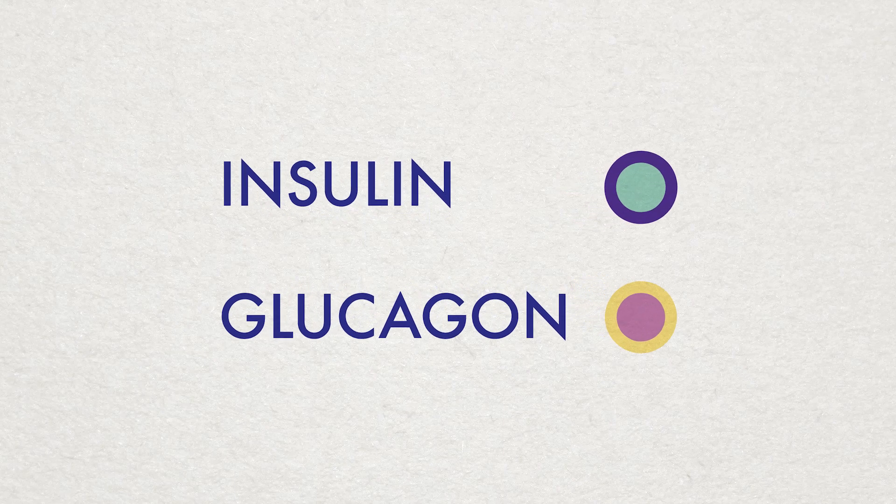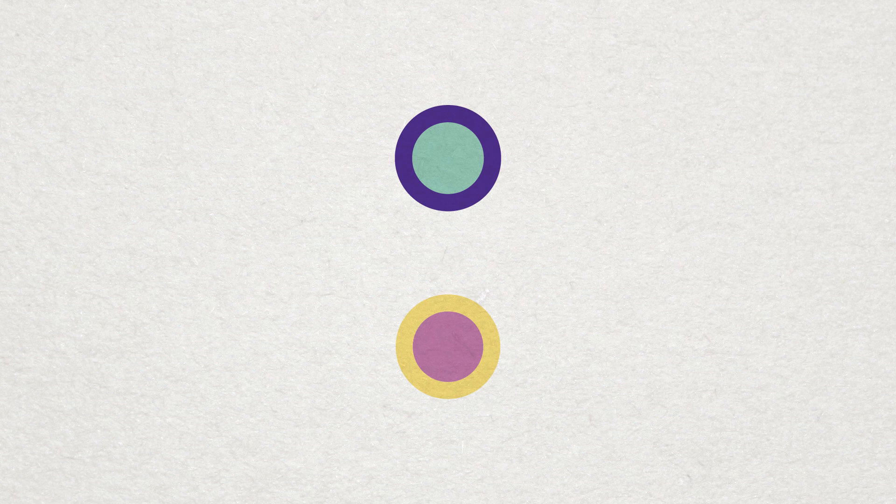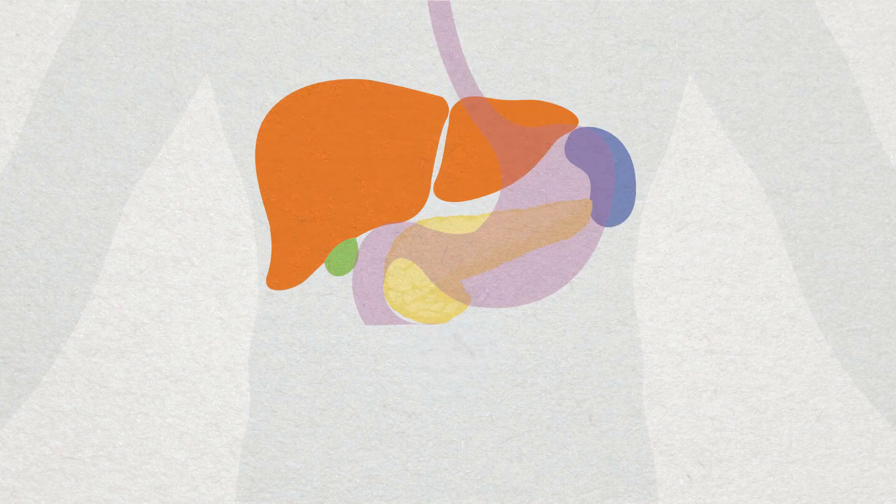Today I'm going to talk to you about the role of insulin and glucagon. Insulin and glucagon are two hormones that are produced by the pancreas and keep the blood glucose levels in balance or homeostasis.